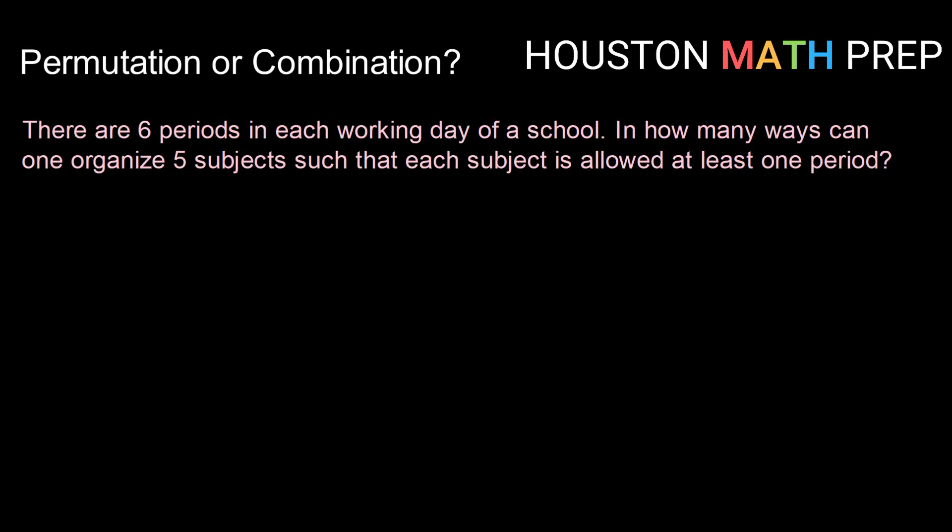Alright, let's take a second example. So there are six periods in each working day of a school. In how many ways can one organize five subjects such that each subject is allowed at least one period? So again, here we need to think about does order matter? Does order make for a different arrangement?